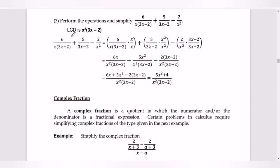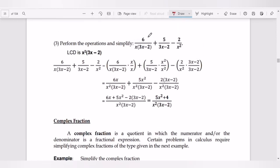For the third expression, we need to perform operations and simplify: 6 divided by x times 3x minus 2, plus 5 over 3x minus 2, minus 2 over x squared. This example involves addition and subtraction. Recalling basic algebra, when adding or subtracting fractions, we need to find the LCD, or least common denominator. The LCD for this expression is x squared times 3x minus 2.